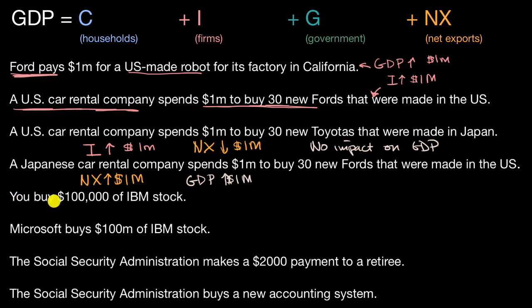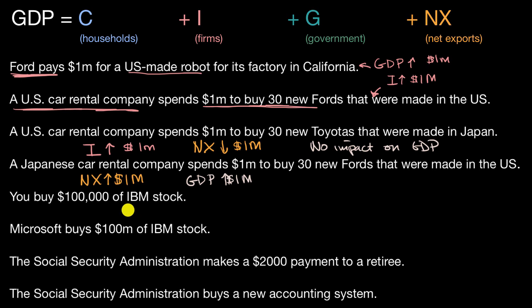This next one is interesting: you buy $100,000 of IBM stock. In traditional language you might say you invested $100,000 in IBM stock, but you're a household — so how does this work? It turns out this does not move any of these GDP categories, because the assumption is that you are buying that $100,000 of IBM stock from someone else. Nothing new is being produced in the United States, so this has no impact.